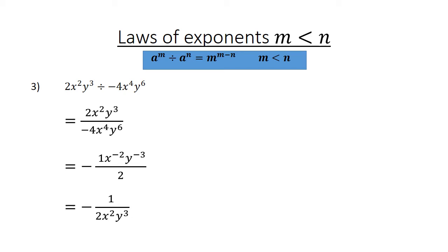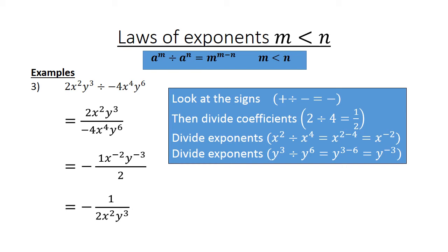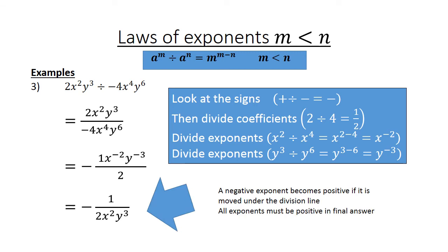The negative x to the power of 2 moves under the line, and the y to the power of negative 3 also moves under the line. Remember, you must always leave your exponents in positive form. Positive divided by negative equals negative. 2 divided by 4 equals a half. x to the power of 2 divided by x to the power of 4 equals x to the power of negative 2. y to the power of 3 divided by y to the power of 6 equals y to the power of negative 3. A negative exponent becomes positive if it is moved under the division line. All exponents must be positive in the final answer.